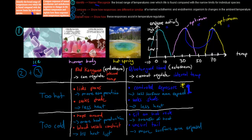The next verb is 'compare': show how the responses of a named ectothermic and endothermic organism differ in response to changes in ambient temperature. A red kangaroo is an example of an endotherm — 'endo' means inside — so it can regulate its internal temperature by itself using internal mechanisms. Whereas a blue-tongued lizard is an example of an ectotherm — 'ecto' means outside — meaning it cannot regulate its internal temperature internally. Whatever the outside temperature is becomes the inside temperature, so it must use the environment to control its temperature.